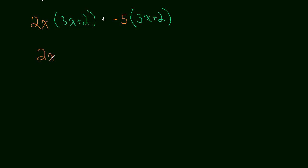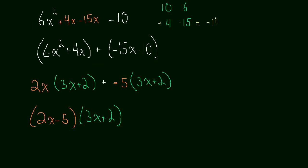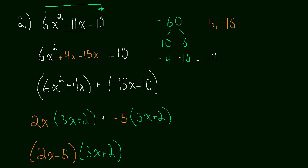This is 2x minus 5 times 3x plus 2. So that's our final answer. We successfully factored this scary looking trinomial. Three terms. This scary looking trinomial we factored and it wasn't too difficult.